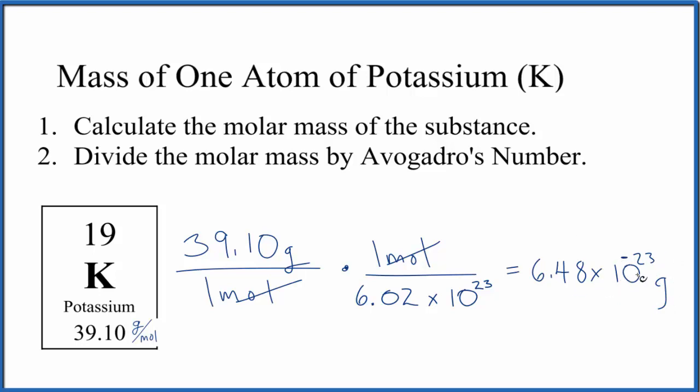If we wanted to convert this to kilograms, the mass of one atom of potassium in kilograms, we divide this by a thousand. So that would make it even smaller, 6.48 times 10 to the negative 26th.